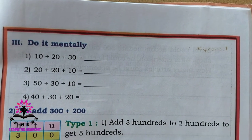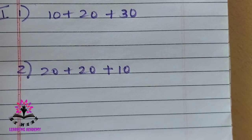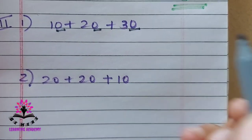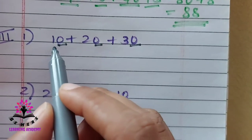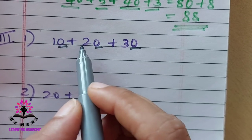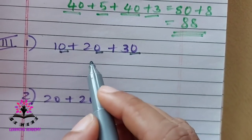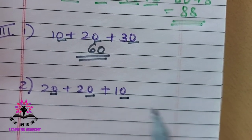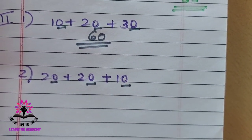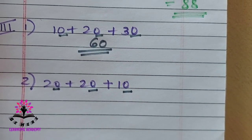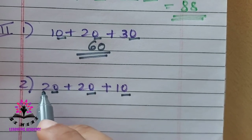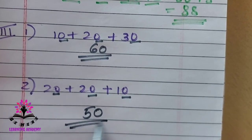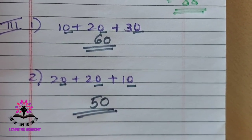Do it mentally: 10 plus 20 plus 30. There is 0 in the unit place for all, so add the tens digits: 1 plus 2 is 3, plus 3 is 6 — the answer is 60. Next sum: also 0 in the unit place, so add the tens digits: 2 plus 2 is 4, plus 1 is 5 — the answer is 50.